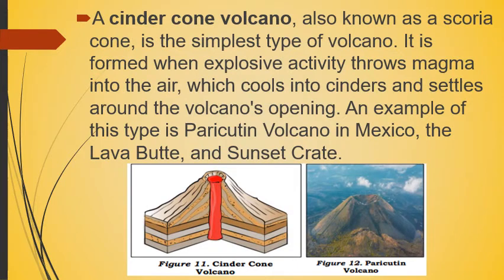A cinder cone volcano is the simplest type of volcano. It is formed when explosive activity throws magma into the air, which cools into cinders and settles around the volcano's opening. An example of this type is Paricutin volcano in Mexico.